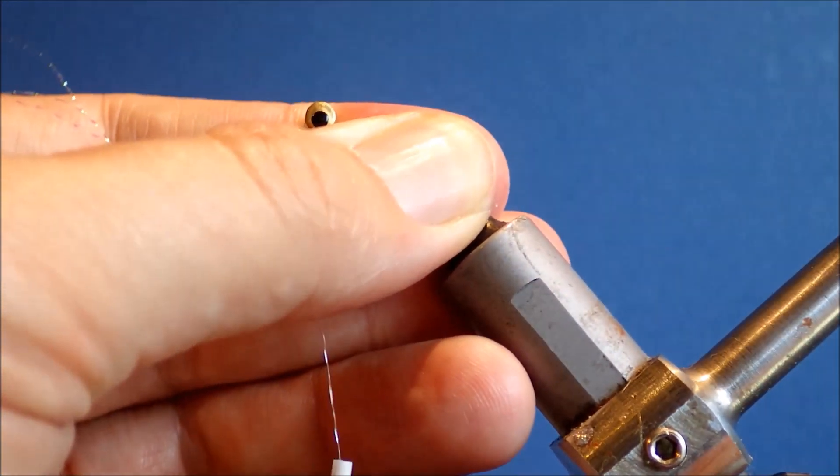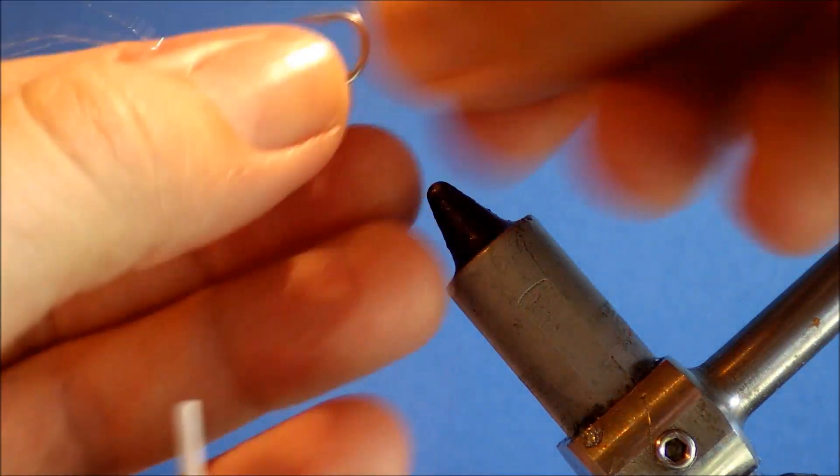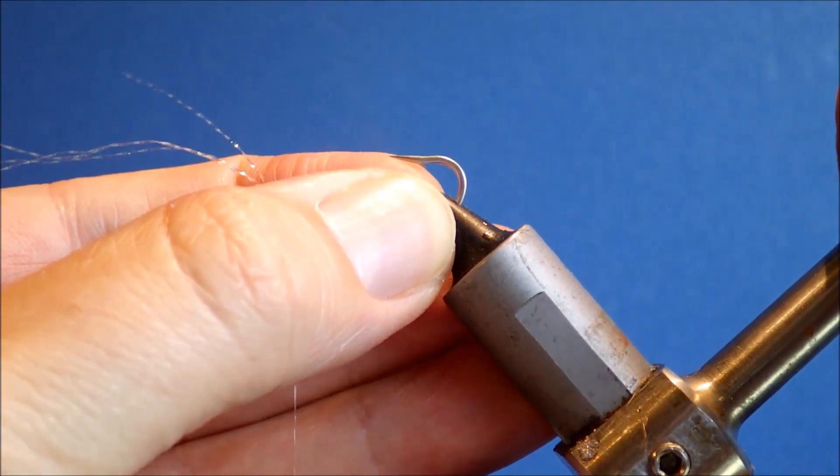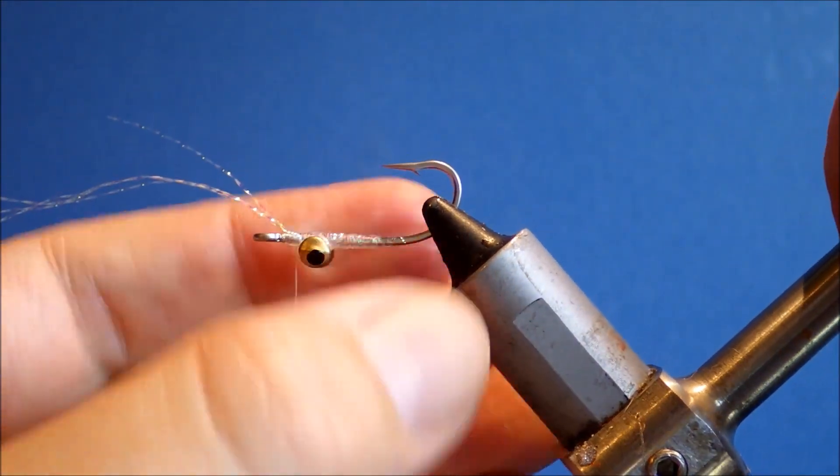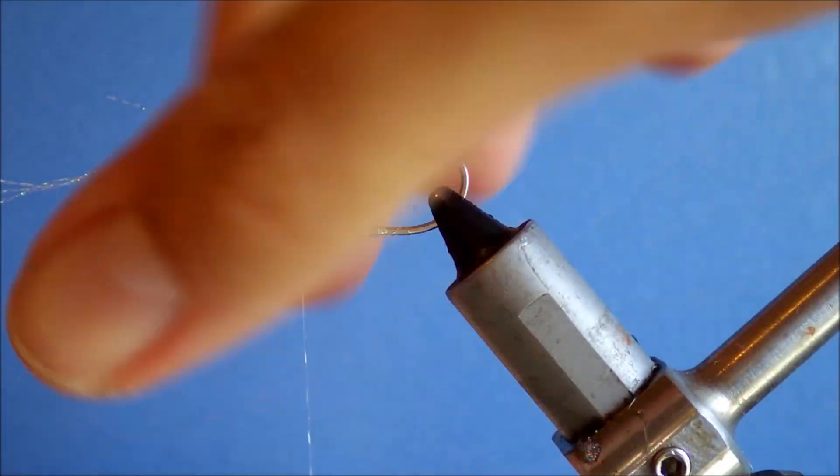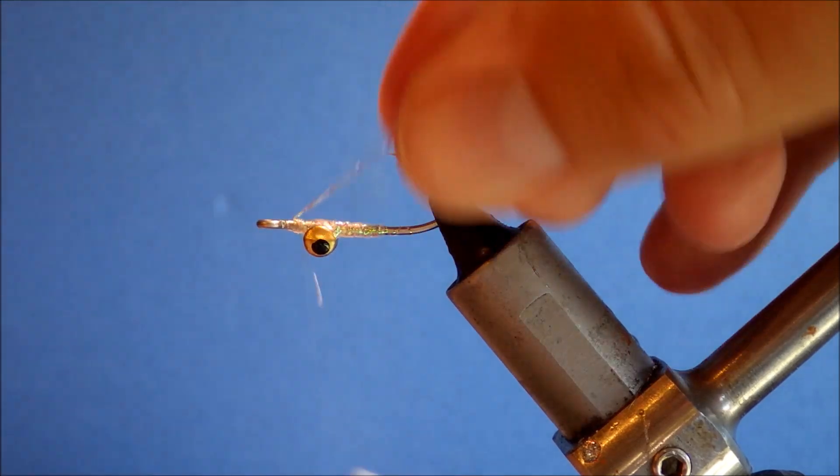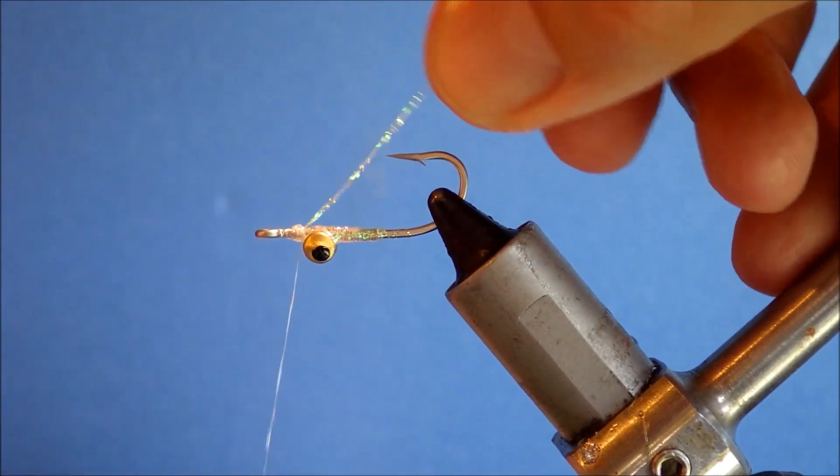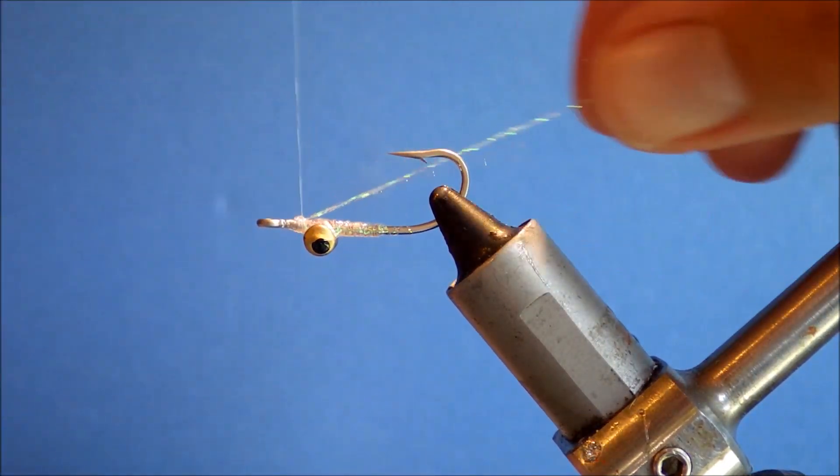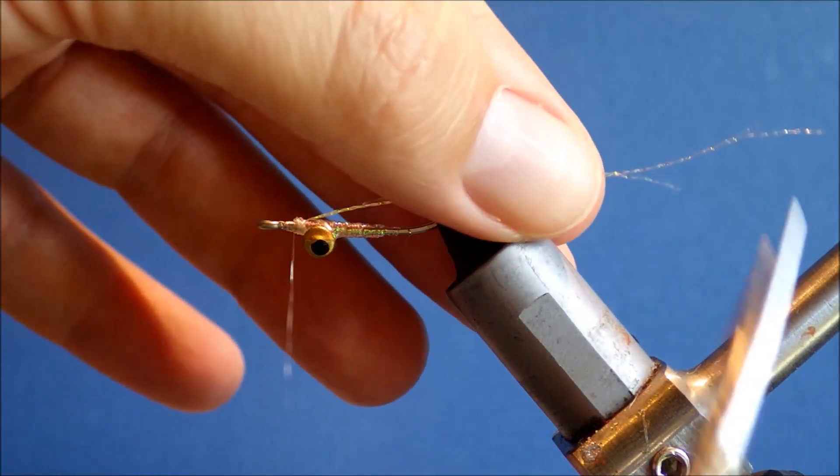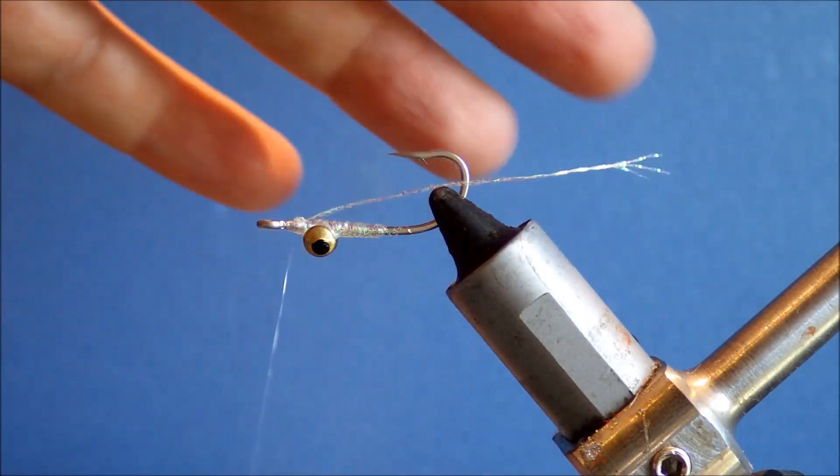And then I'll just invert the hook, just so you get a better view. And then I'll fold these back to be the first part of the wing. And just leave them whatever length they are, quite long but uneven.